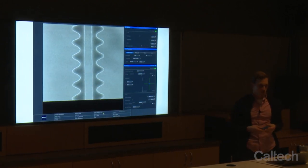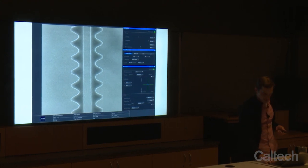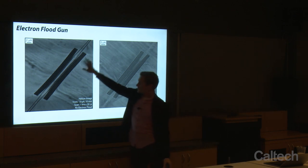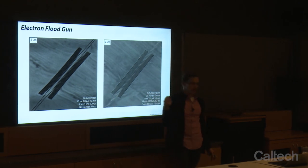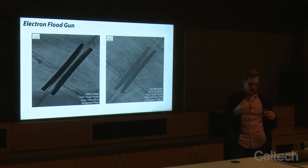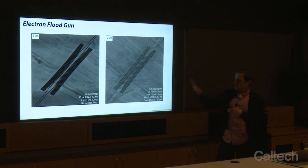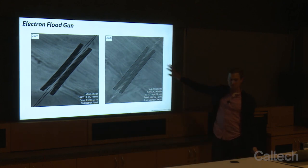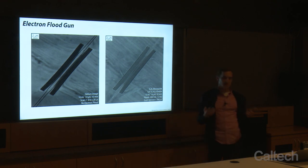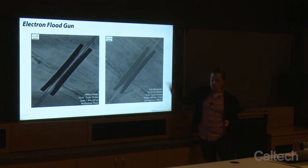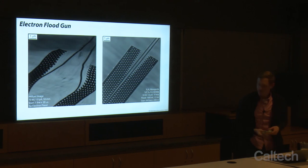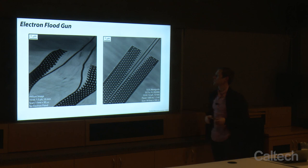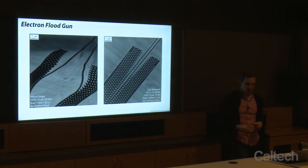It's this charge balance that we use to get the nice image. Here's another waveguide: without the flood gun, the image is dark because positive charge builds up and holds onto the secondary electrons, like a black hole for secondary electrons. When we flash with electrons and balance the charge at the surface, we effectively liberate those secondary electrons so they can go to the detector. Without the flood gun we get strange scanning and charging artifacts; when we start flashing the flood gun, everything stabilizes and we get a clean image.